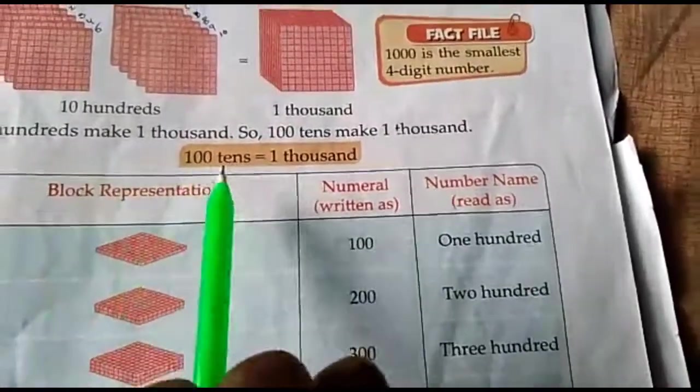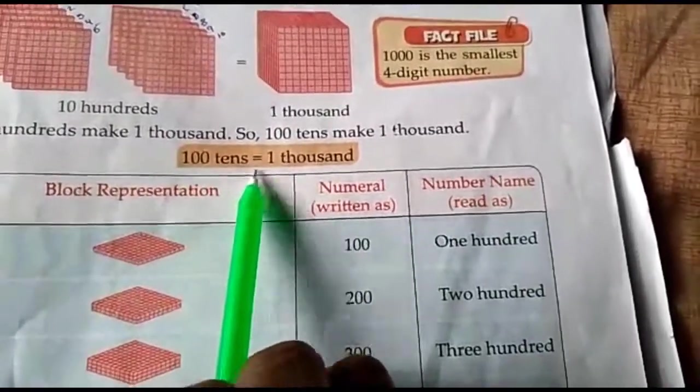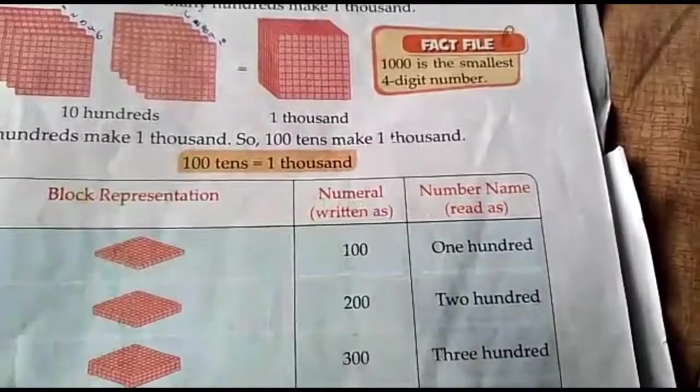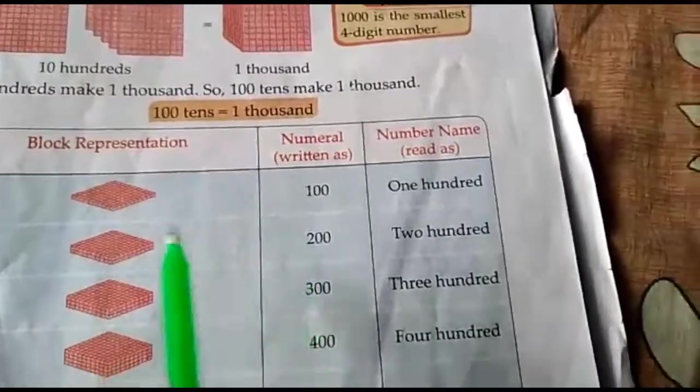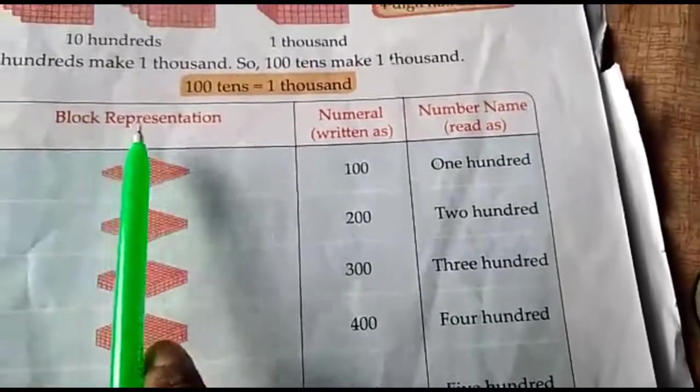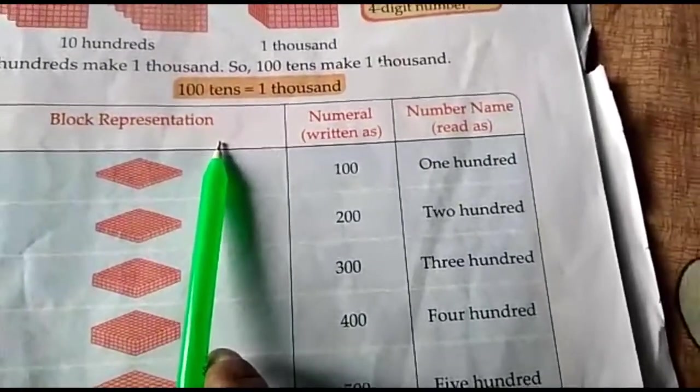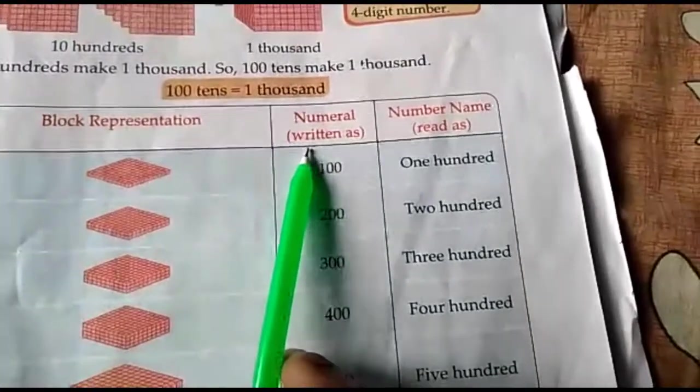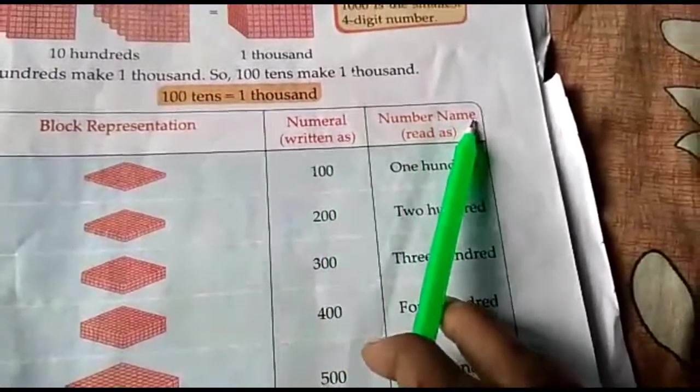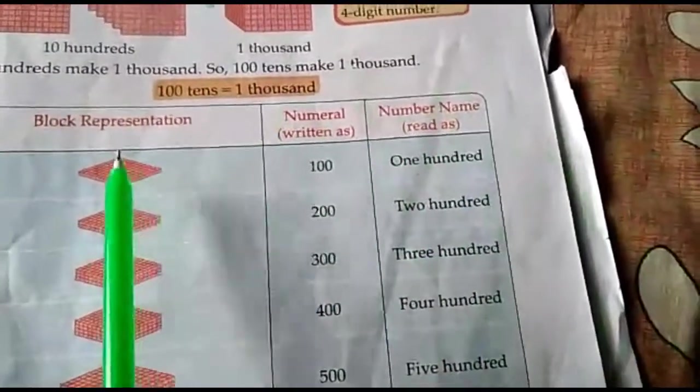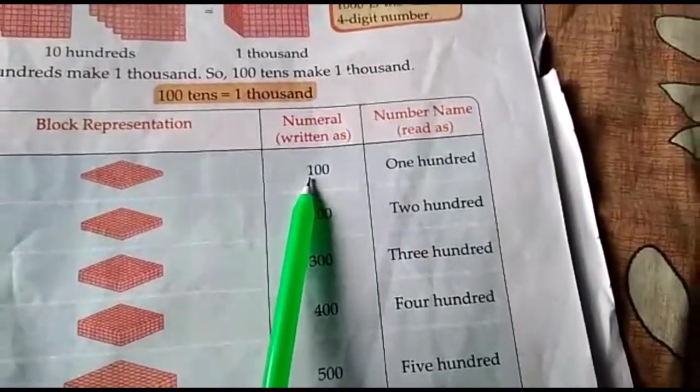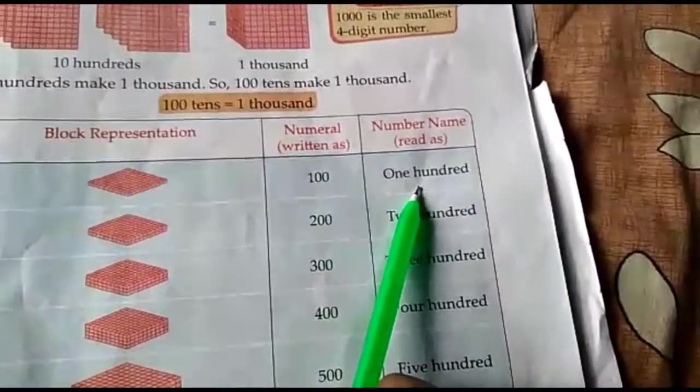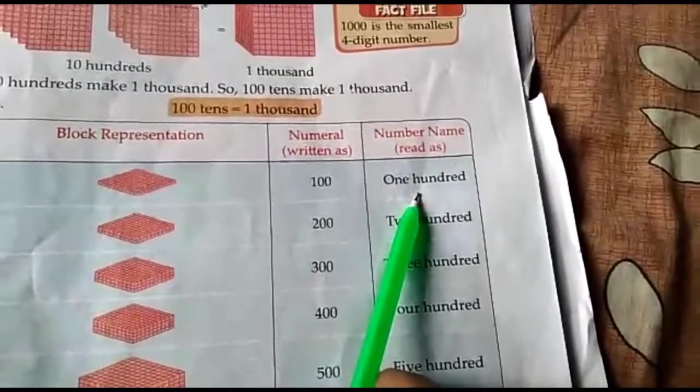Clear? Hundred tens one thousand. Ok. See. This is block representation. Numeral written as number name. Ok. Here picture. And number. And number spelling. Ok children.